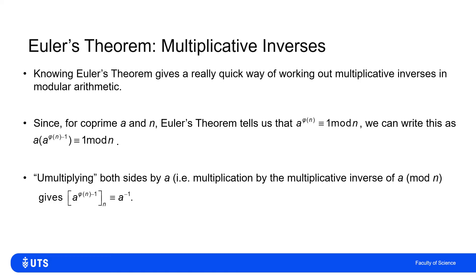So if I try to un-multiply both sides by this a, get rid of this leading a, then I get to the fact that a to the power of phi n minus 1 is equivalent to a to the minus 1 mod n. So I can work out what the multiplicative inverse, a inverse is, by working out a to the phi n minus 1 mod n.